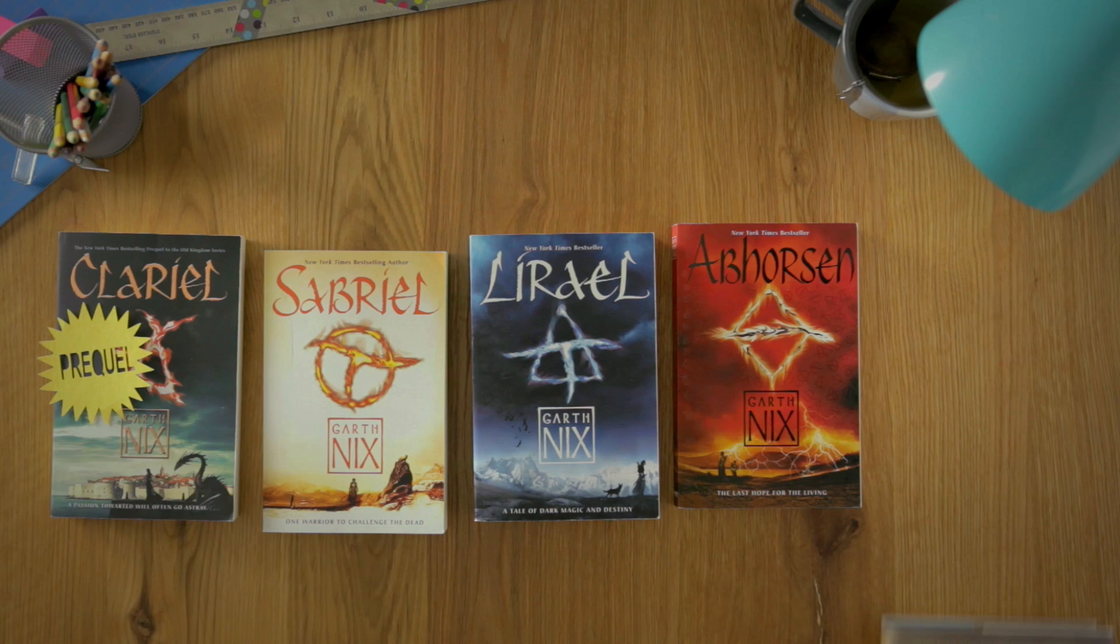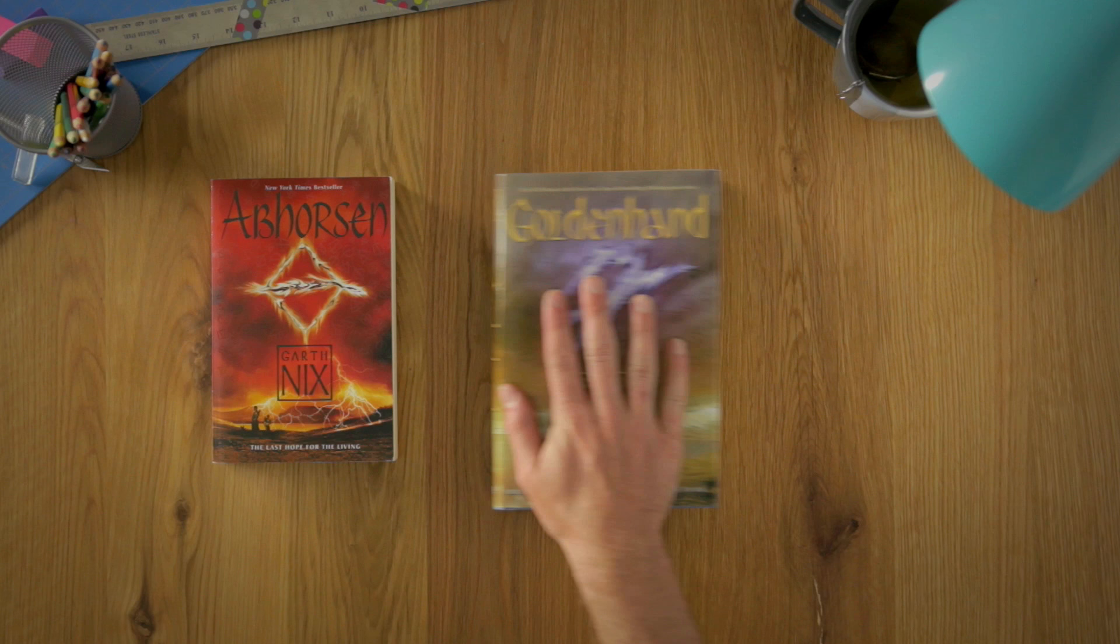Goldenhand takes place after the events in Abhorsen. Well, technically it takes place after the events in a short story called The Creature in the Case.